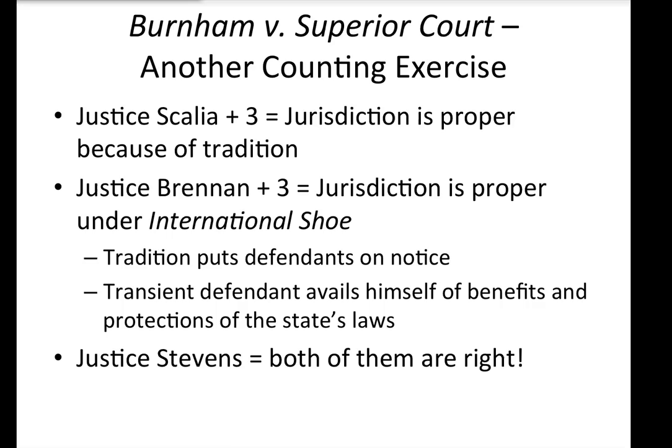Then there was the ninth justice, Justice Stevens, who said basically everyone is right. Rather than taking the side of one or the other so that there could be a clear rule, Justice Stevens held that it is sufficient to note that the historical evidence and consensus identified by Justice Scalia, the considerations of fairness identified by Justice Brennan, and the common sense displayed by Justice White all combine to demonstrate that this is indeed a very easy case. So the result is — like Asahi — no clear rule on tag jurisdiction. Everybody agreed it was proper here, but there was no agreement about whether it was proper because of tradition or because International Shoe applied and was satisfied.